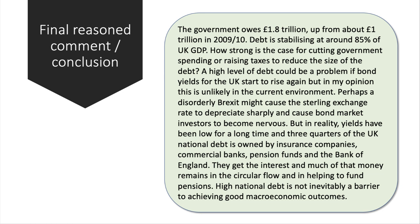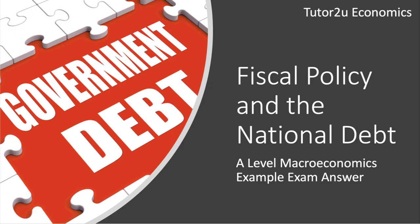Most of the UK debt is owned by insurance companies, commercial banks, pension funds, and the Bank of England. Given that the majority of debt is owned by UK financial institutions and the Bank of England, they receive the interest, and much of that money either remains in the circular flow or helps to fund pensions. So you can make a case for saying that debt itself is not necessarily a fundamental problem. My last point: high national debt is not inevitably a barrier to achieving good macroeconomic outcomes. That's a sort of evaluative conclusion to bring your essay to a close. Thanks for joining in on this video.